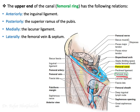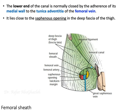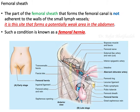Medially, the femoral ring is bordered by the lacunar ligament, which is a continuation of the inguinal ligament. Laterally, it is bordered by the femoral vein and the septum. The lower end of the femoral canal is fused with the adventitia of the femoral vein, which provides extra strength and decreases the gap and weakness at that location.